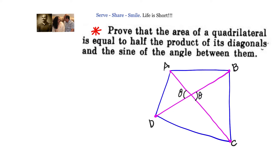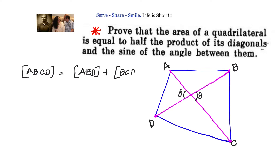The area of the quadrilateral can be given by the sum of areas of two triangles ABD and BCD. So, area of ABCD equals area of triangle ABD plus area of triangle BCD. The formula for the area of a triangle is half into base into height. We will consider BD as our base for both triangles ABD and BCD.